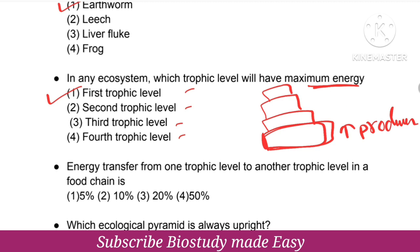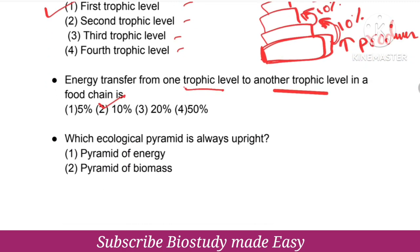The energy transfer from one trophic level to another in a food chain — only 10% of the energy is transferred. Producers have energy, herbivores get 10%, carnivores get 10% of that. The right option is 10%.